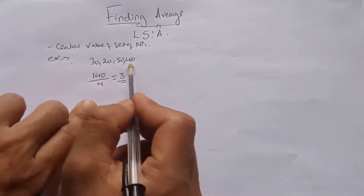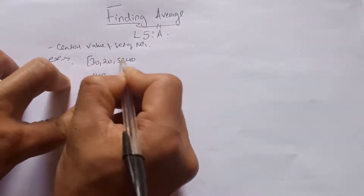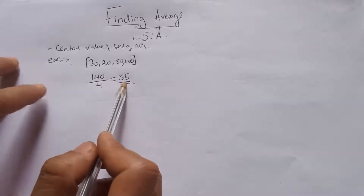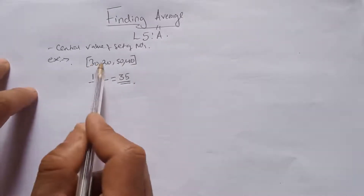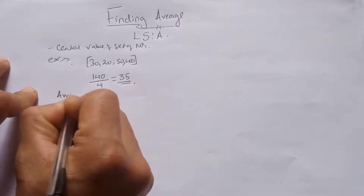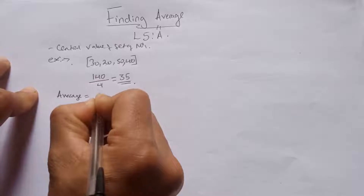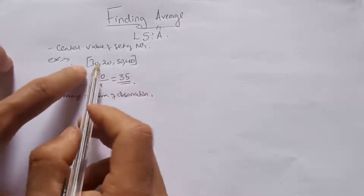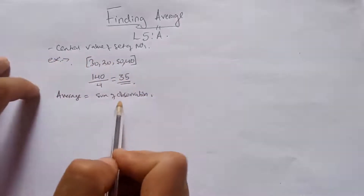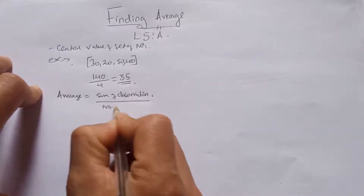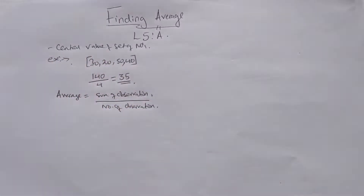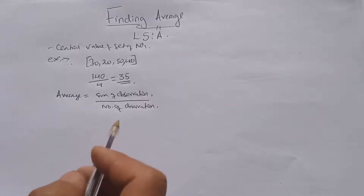35 is the central value of the set of numbers 30, 20, 50, 40. The middle value is 35. So the formula tells us: add the sum of observations divided by the number of observations. When we divide the sum of observations by the number of observations, we get the average.